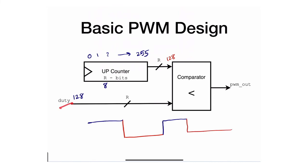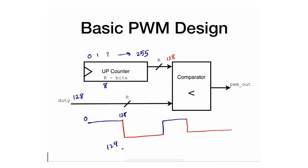The duty input controls the duty cycle. The signal stays high from 0 to duty-minus-1, meaning the output is high for exactly 127 counts when duty is set to 128. The actual duty cycle of the PWM output is therefore (duty − 1) divided by 2 to the power R, which in the 8-bit case is (duty − 1) / 256.